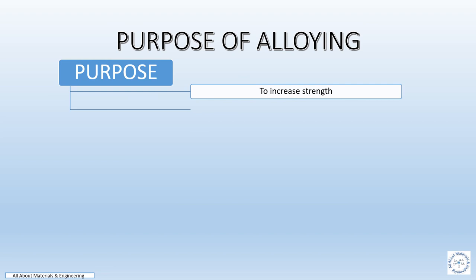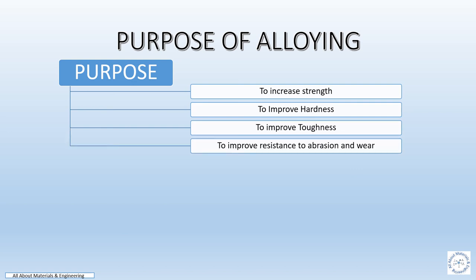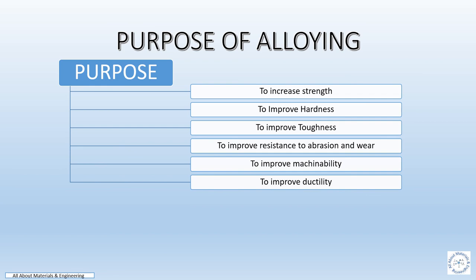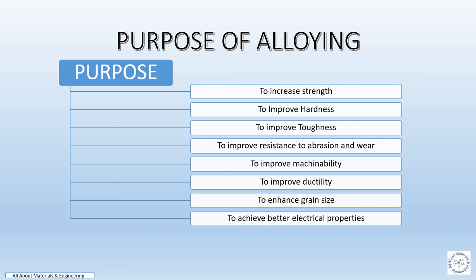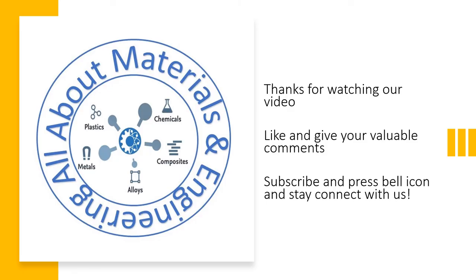There may be various purposes of alloying. The main purpose is to increase mechanical properties such as strength, hardness, toughness, and resistance to abrasion. It is also used to improve machinability and ductility, to enhance the grain size of the material, and to achieve the desired electrical and magnetic properties of a material.